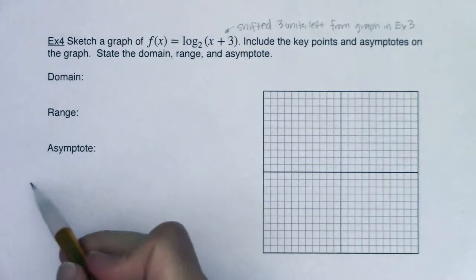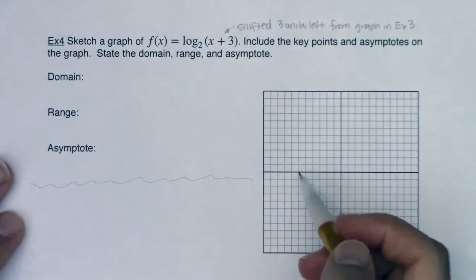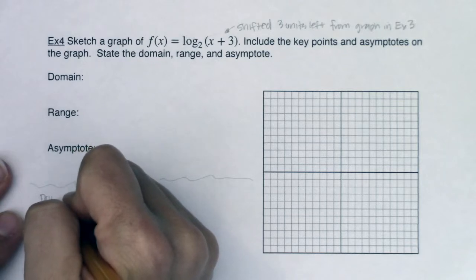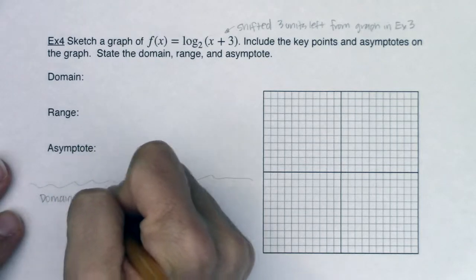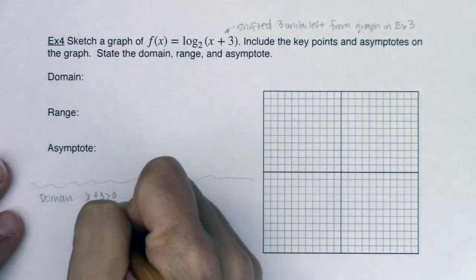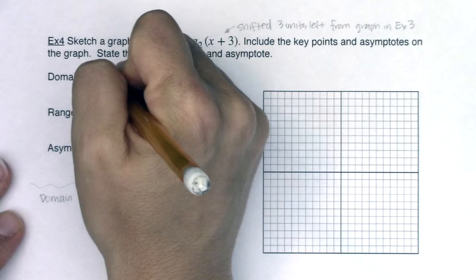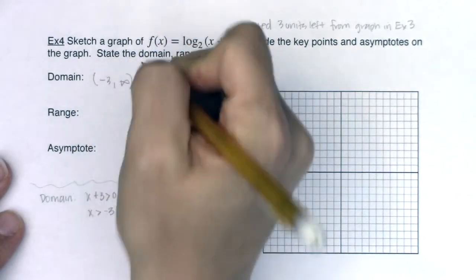So let's start with the domain. I need to make sure that my argument is greater than 0, that it's positive. So I need to know when x is greater than negative 3. So my domain is going to be from negative 3 to infinity.